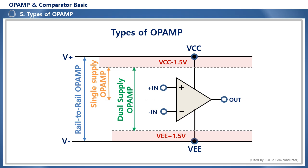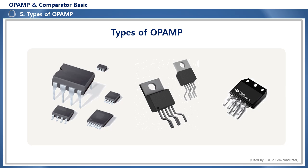Depending on the input circuit method, op-amps are classified into three types: bipolar, JFET, and CMOS. The bipolar type has a current drive structure at the input stage, so the input current is somewhat large, while the JFET and CMOS types have voltage drive at the input stage, so the input current is very small. Depending on performance and application, op-amps are also classified into low noise type, high speed type, precision instrument type, and high power type. Depending on the package, there are various types such as DIP type, SMD type, and high power type with heat sink.